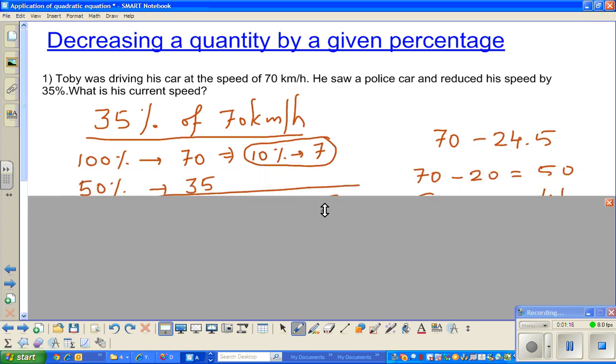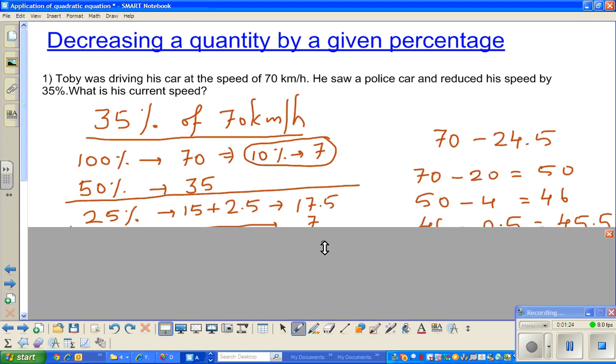Listen to my argument. If 100% is 70, 50% would be half of 70, which is 35. And if 50% is 35, 25% would be half of this. I've done it in two steps. First half of 30, which is 15, and half of 5 is 2.5. So half of 35 is 17.5.